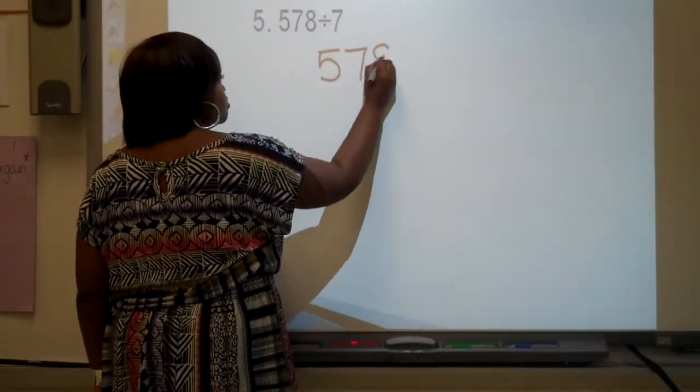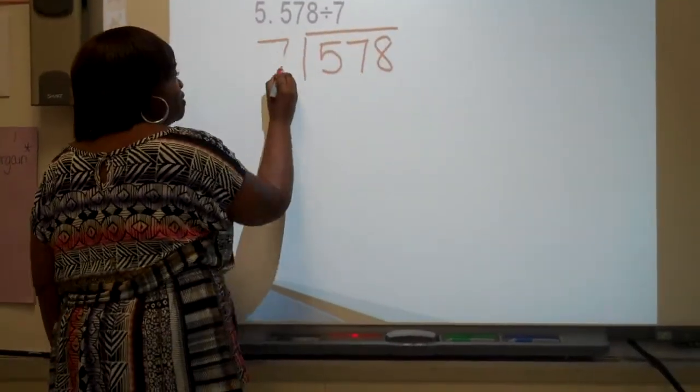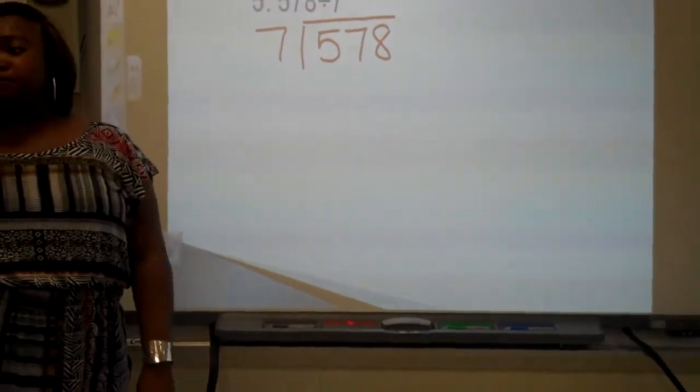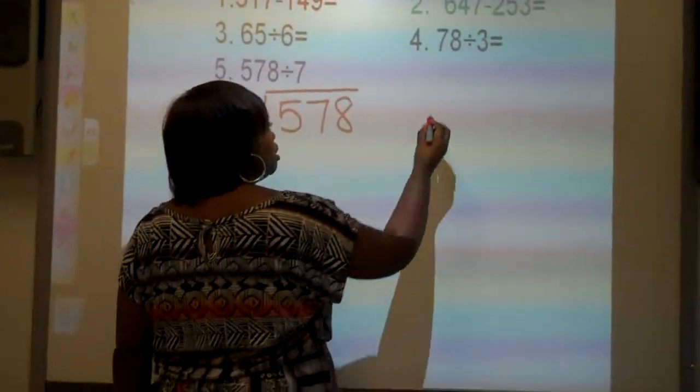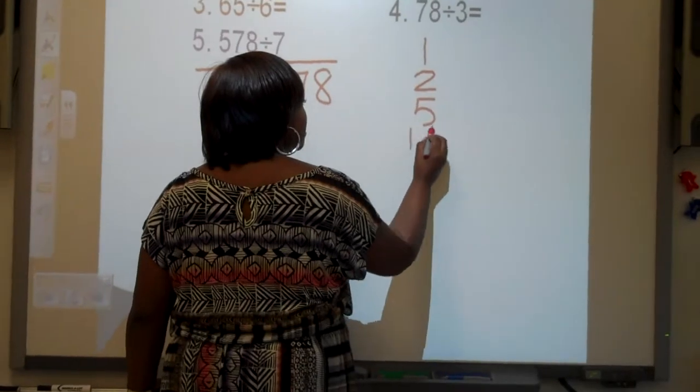578 divided by 7. Alright, what's the first thing I do? 20! I'm going to put 1, 2, 5, 10.